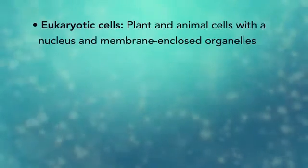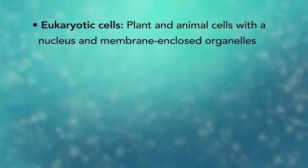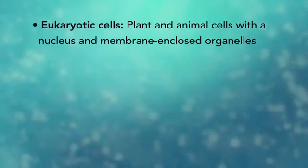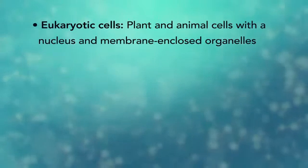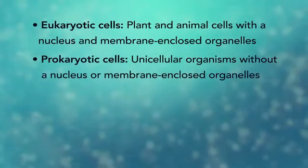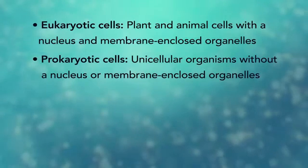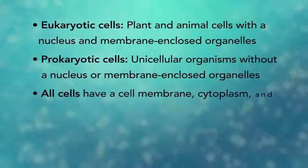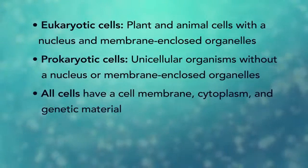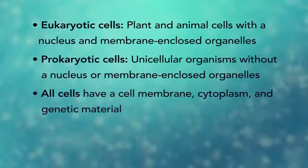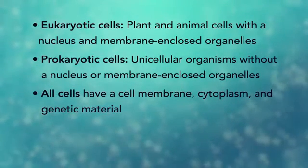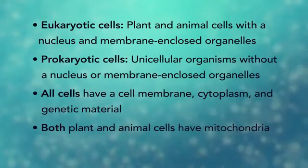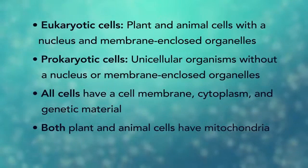In summary, remember, eukaryotic cells are plant and animal cells with a nucleus and membrane-enclosed organelles, while prokaryotic cells are unicellular organisms without these things. All cells have a cell membrane, cytoplasm, and genetic material. And even though only plant cells have chloroplasts, both plant and animal cells have mitochondria.